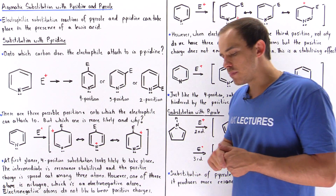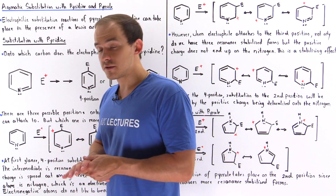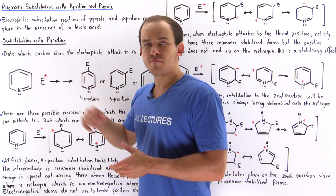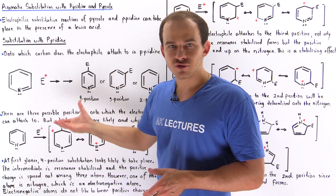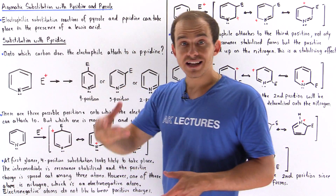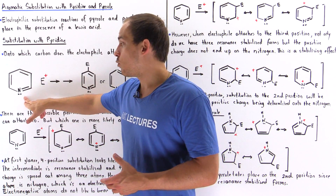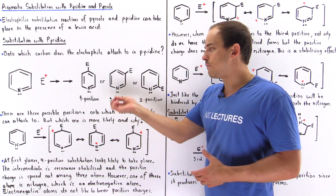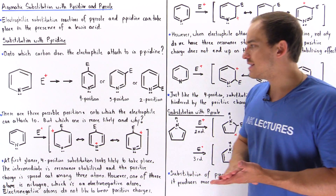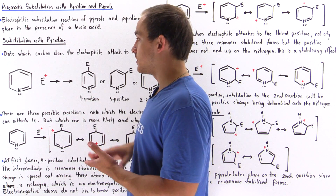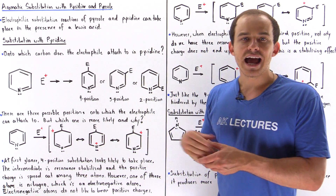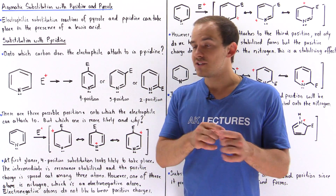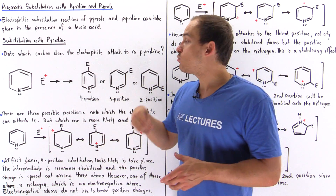Let's begin by discussing the electrophilic substitution of the pyridine molecule. The electrophile, our Lewis acid, interacts with our nucleophile, the Lewis base, and in two steps we produce one of four possible products. There are three different positions onto which the electrophile can actually attach itself. The question is which one does the electrophile attach to and why?